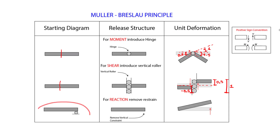Lastly, the reaction. We have our starting diagram with a roller at the end. For the reaction we always remove the restraint — in this case the vertical constraint from the roller. After removing it, we apply a unit deformation as the last step, and it's going to be upward of 1. That's all we need to apply in order to draw the influence line. Let's see this in application.